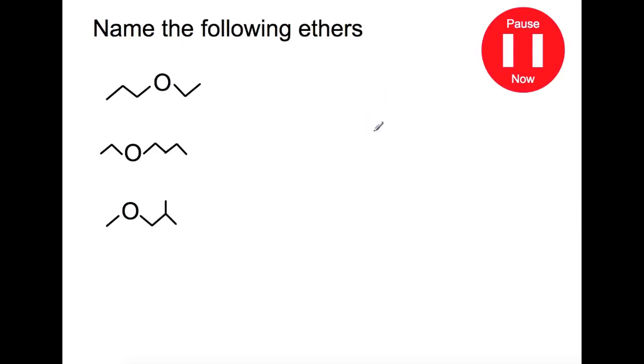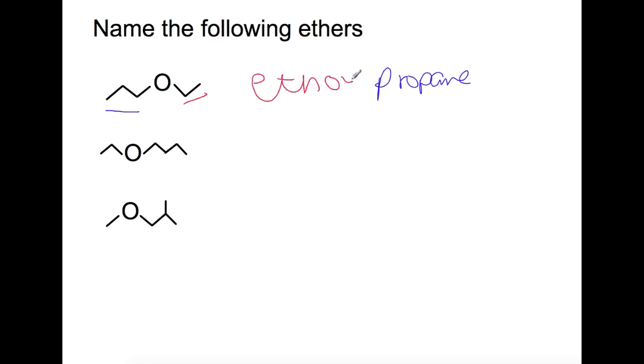Try to name the following ethers. Pause the video now. So for this first example our longest chain has one two three carbons so the base of the name for this one will be propane. The branch that is attached has two carbons and the oxygen so this will be ethoxy propane.